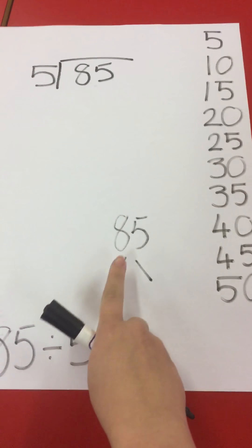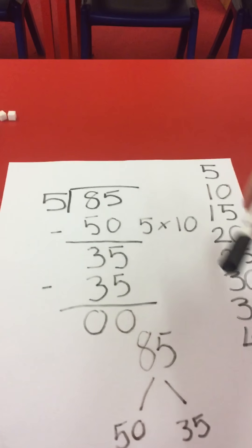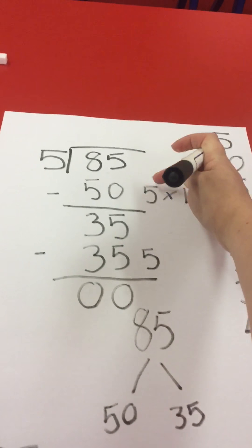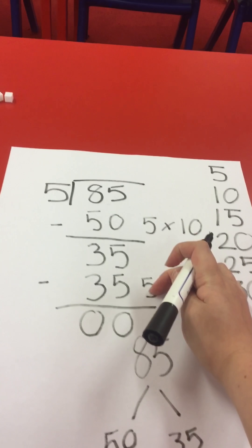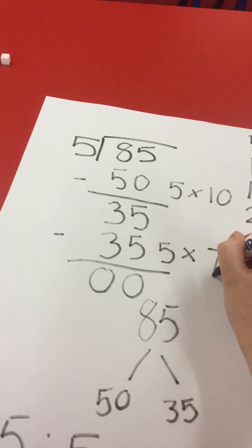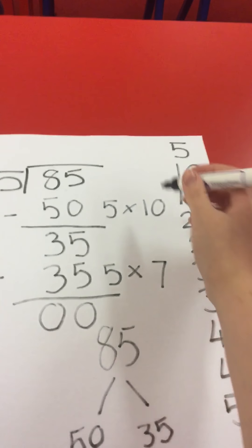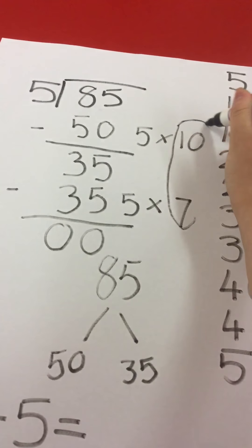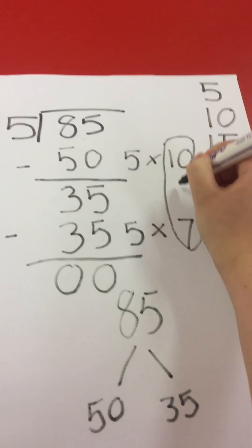30 take away 30. To help me find the answer I am going to show what I have times. To get 50 I did 5 times 10. To get 35 I did 5 times 7.